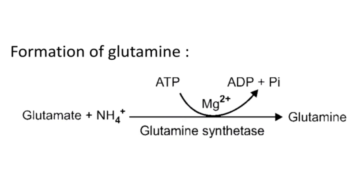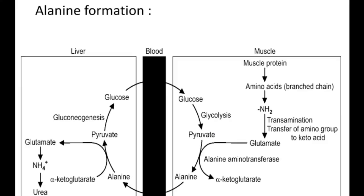Coming to the formation of glutamine: tissues like the brain generate free ammonia. That free ammonia reacts with glutamate, and this reaction is catalyzed by glutamine synthetase to form glutamine. Ammonia is toxic, whereas its transport form glutamine is a non-toxic compound. In this way glutamine is formed.